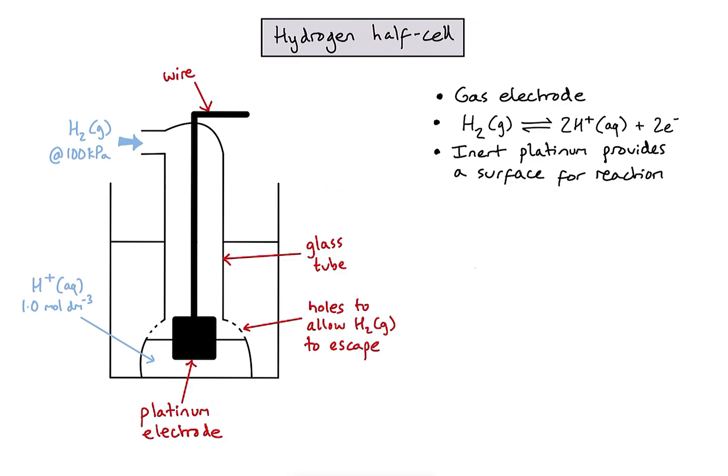And this is going to be a super useful half cell for us, because it's actually, by convention, my reference half cell to which all other half cells are compared. So, for that reason, it's called the standard hydrogen electrode. And we assign this half cell a standard electrode potential of zero volts, because it's our arbitrary reference point.